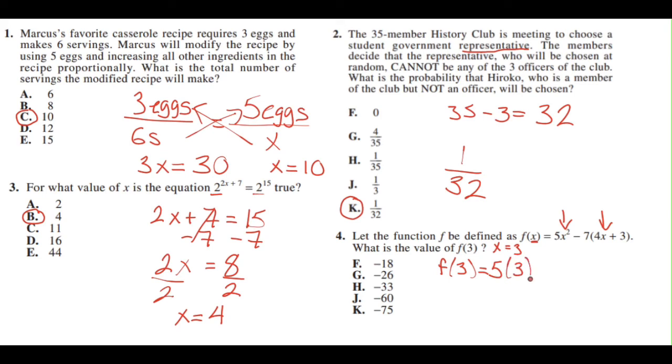We're going to get 5 times 3 squared minus 7 times 4 times 3 plus 3. 5 times 3 squared, 3 squared is 9, 5 times 9 is 45, minus 4 times 3 is 12, 12 plus 3 is 15, and 7 times 15 is 105. 45 minus 105 is negative 60, which is answer choice J.